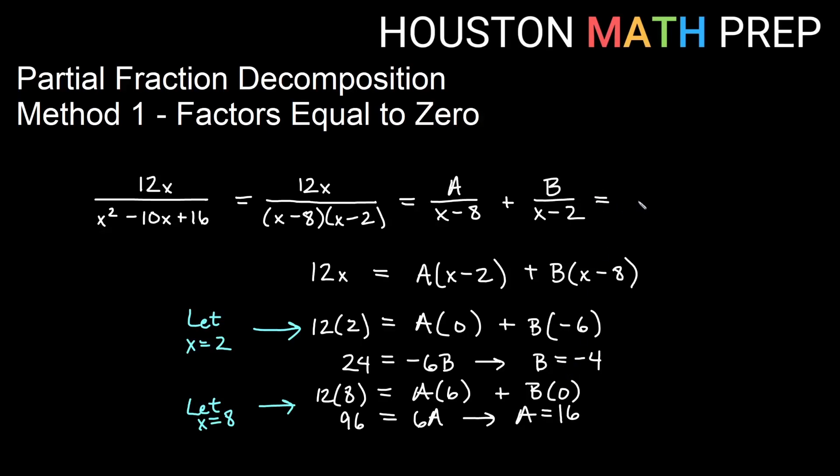So our partial fraction decomposition, we would say 16 over x minus 8, because that was our a, minus 4 over x minus 2, because our b was negative 4. So this is our partial fraction decomposition using the method of setting factors equal to 0.